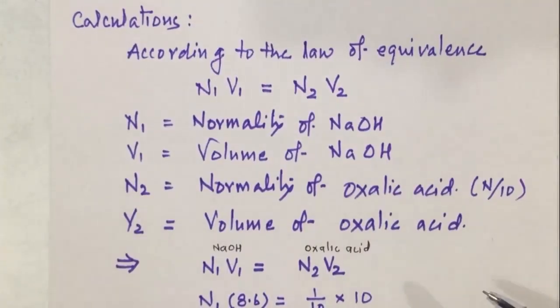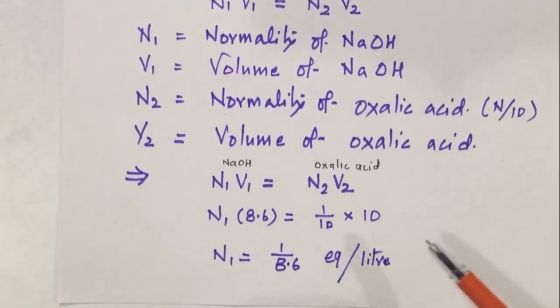For calculating the normality of NaOH solution, we are using law of equivalence, which is N1 V1 equals N2 V2. N1 is normality of NaOH, V1 is volume of NaOH, N2 is normality of oxalic acid, and V2 is volume of oxalic acid. By putting the values of V1, N2, and V2, we get the value of N1, which is 1 by 8.6 equivalents per liter.